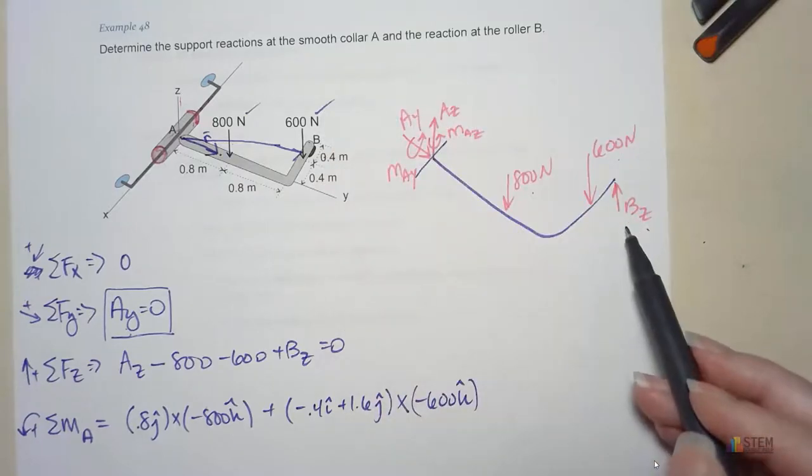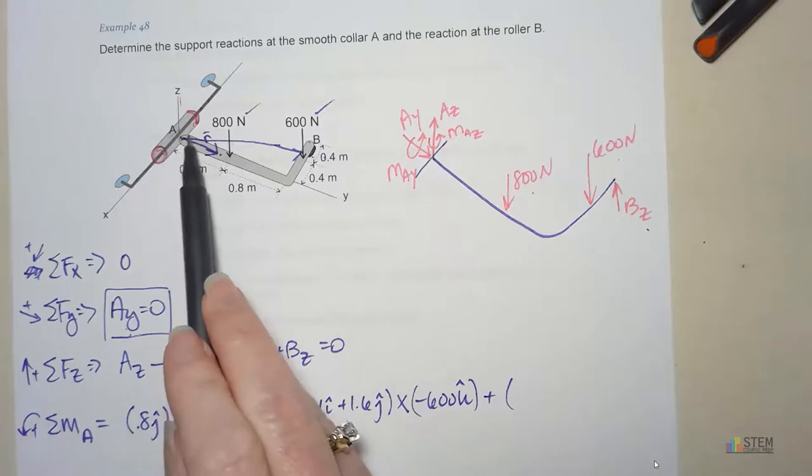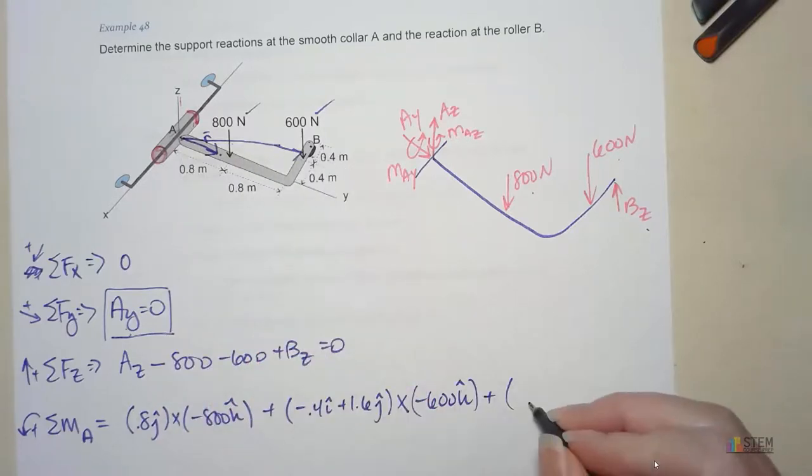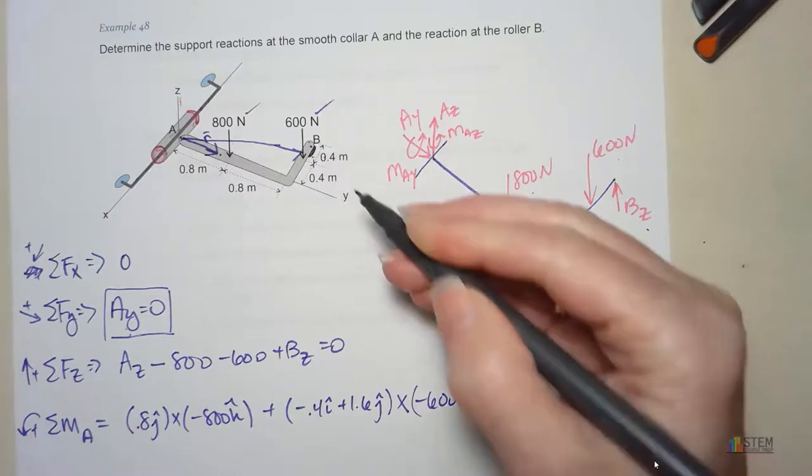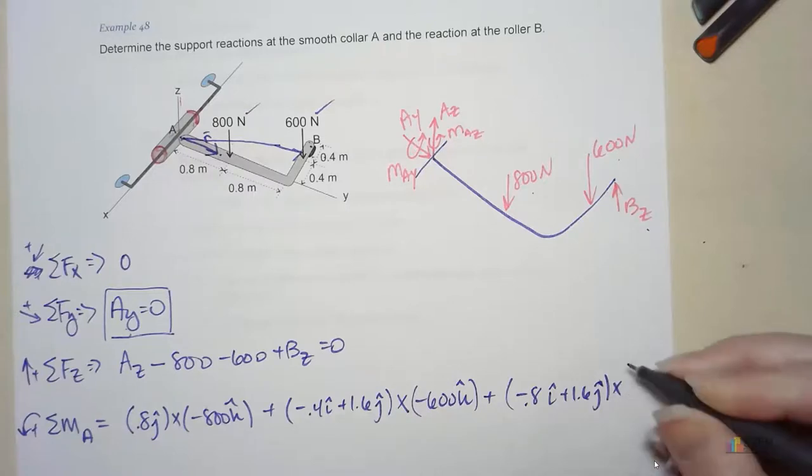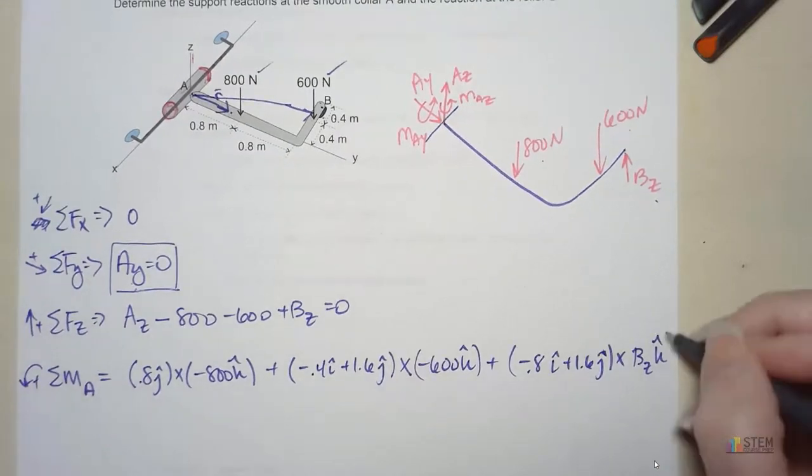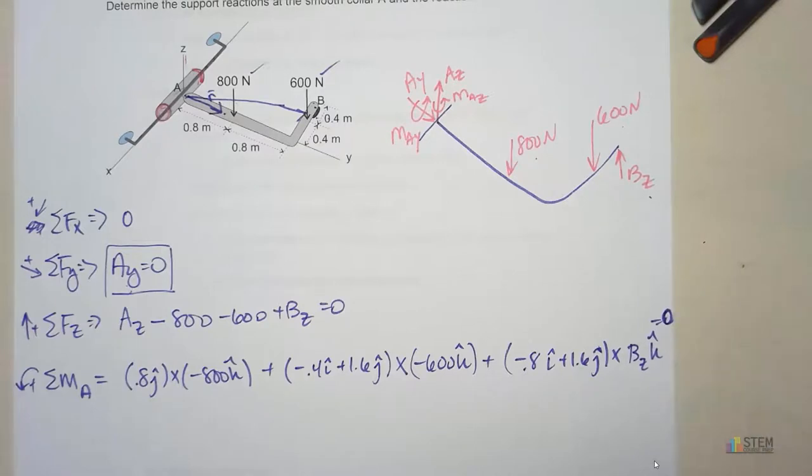Now we have BZ, due to this roller right here. Find your position vector. We go from A over to B. That position vector is going to be negative 0.8 because we're going back to 0.8, and that's I, and then plus 1.6J. Then we cross that with BZK because we're assuming that's positive. And this has to equal 0. I want you to do the cross products and group everything up.